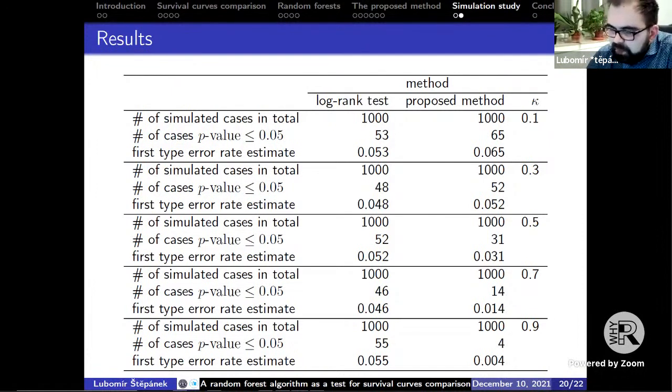The number of trees in the random forest was almost 1,000. The number of cases where the p-value was lower than or equal to α of 0.05 regardless of the method was summed up, by which we got the point estimates of the first type error rates, as was stated in the table. As you can see, while the log-rank test returned a point estimate of the first type error rate about 0.05 regardless of κ, since the chi-square statistic for log-rank is not a function of κ, the point estimate of the first type error rate output by the introduced method progressively decreased with increasing value of κ.